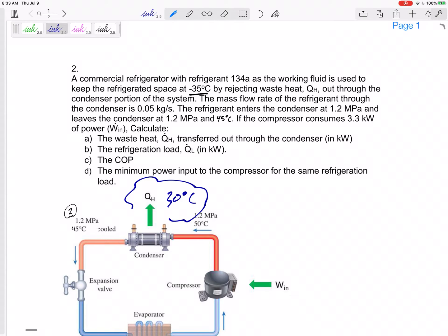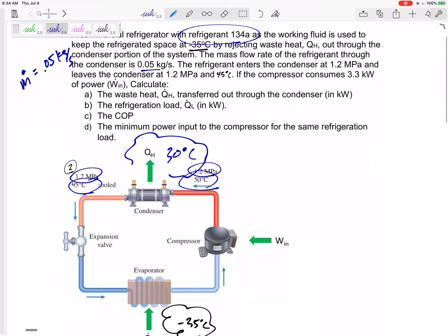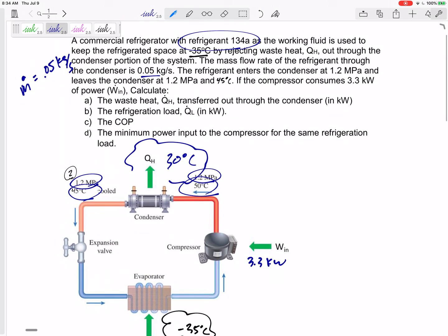So it's using refrigerant 134A. It rejects QH out through the condenser portion of the system. The mass flow rate of the refrigerant through the condenser is M dot, 0.05 kilograms per second. The refrigerant enters the condenser at a pressure of 1.2 MPa and a temperature of 50 degrees C. It leaves the condenser at 1.2 and 45 degrees C. If the compressor consumes 3.3 kilowatts of power, then calculate all this.